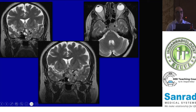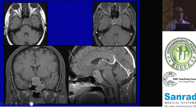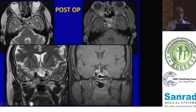Another case of macroadenoma with three-directional extension: left parasellar, suprasellar, and also extension downwards into the sphenoid sinus. You can see the optic chiasm — that thin band of tissue — splayed along the superior margin of the macroadenoma, and again the common feature of cavernous sinus involvement with ICA encasement but maintained flow-void. On post-contrast imaging the moderately enhancing tumor extends into the sphenoid sinus. On post-operative imaging the surgeon has excised the sellar, suprasellar, and infrasellar components but left behind the left cavernous sinus component, which is the residual tumor margin that will need follow-up or radiotherapy treatment.